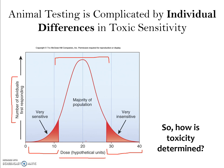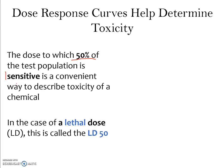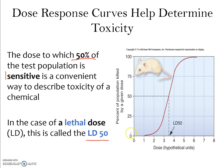To measure whether something is dangerous or toxic, one common measurement is the dose to which 50% of the population is sensitive. If we're measuring sensitivity as death, we call this the lethal dose 50, or LD50 — the dose at which 50% of the population dies. On the dose-response curve, a hypothetical dose of 3.5 units represents our LD50.